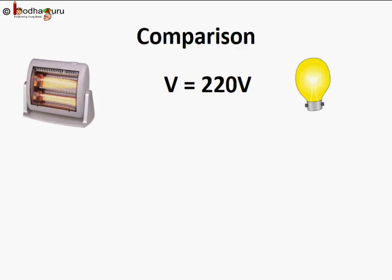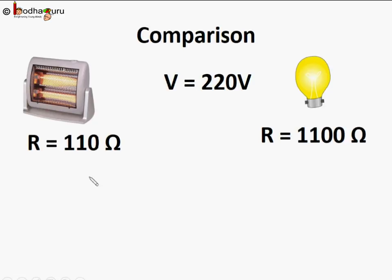Let's compare the two examples. The voltage is the same as both appliances are connected to the same power supply - in India it's 220 volts, in other countries like the US it's 110 volts. In the case of the heater, the resistance is 10 times less than the bulb. The heater has 110 ohms and the bulb has 1100 ohms.